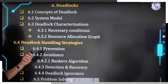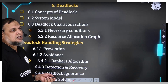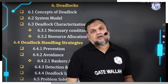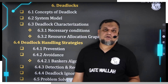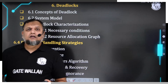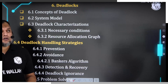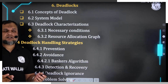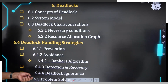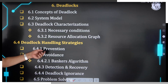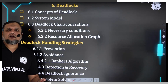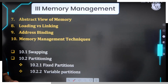The next aspect of Process Management is Deadlocks — also an important chapter. Here we will see the concept of deadlock, strategies for dealing with deadlock, deadlock characterization, various strategies such as prevention, avoidance, the Banker's Algorithm, deadlock detection and recovery, and so on.